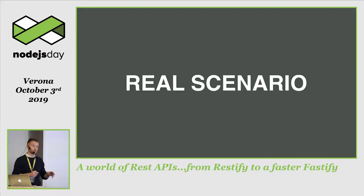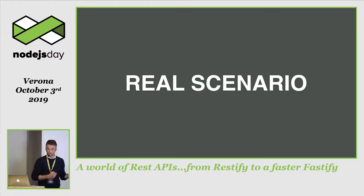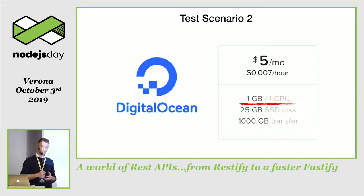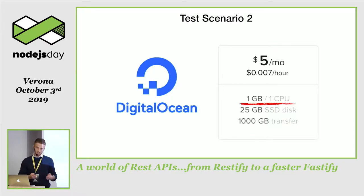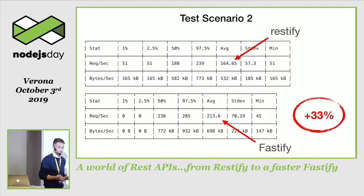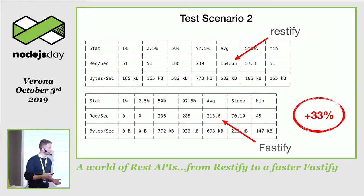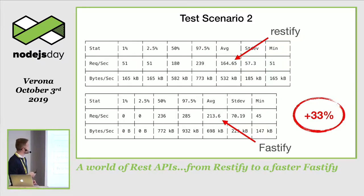To recap the results: on the left you can see the original requests per second with RESTify and the original Node.js HTTP proxy. In the center, migrating only the REST API to Fastify gives a 22% improvement. On the right, using both Fastify and the fastify-http-proxy plugin gives about 50% improvement. For the sake of completeness, I also tested on a DigitalOcean machine — a real cloud provider scenario with a single-core, one-gigabyte RAM machine. The results showed a 33% improvement, from 164 to 213 requests per second.